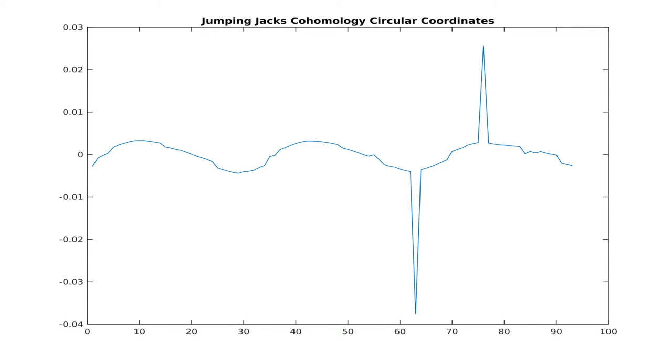Now let's look at the circular coordinates of the curve that results from walking around ellipses along all of these planes simultaneously. Aside from a couple of outliers, these coordinates track three periods of the jumping jacks quite nicely.